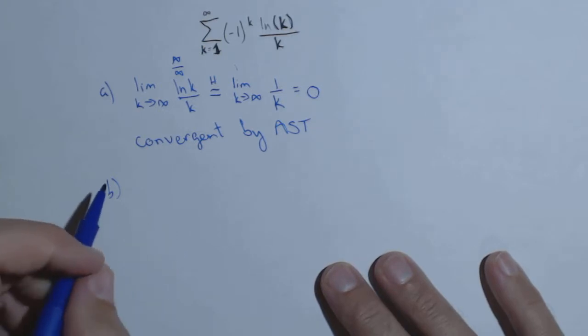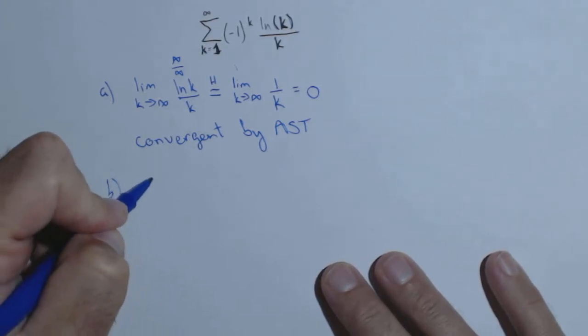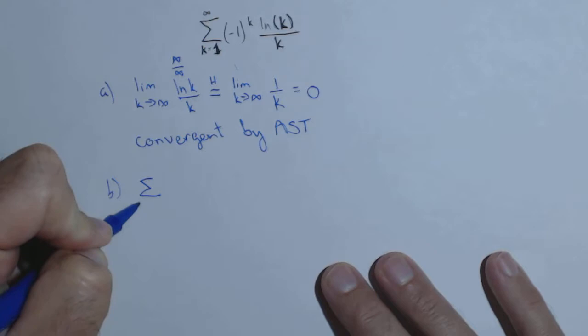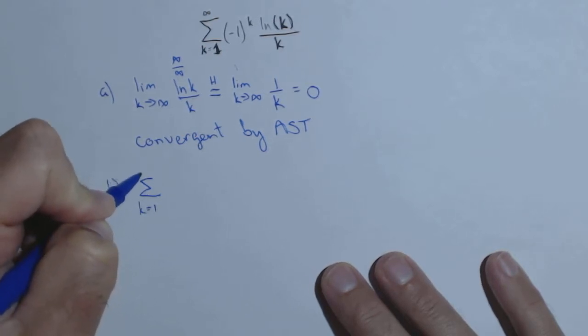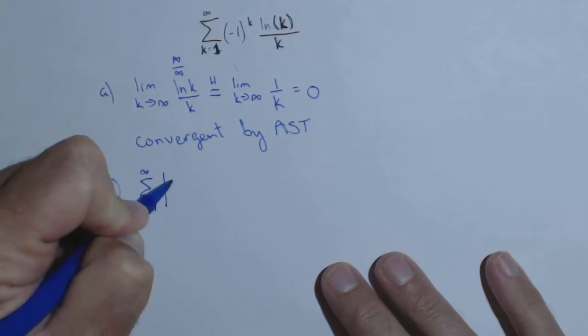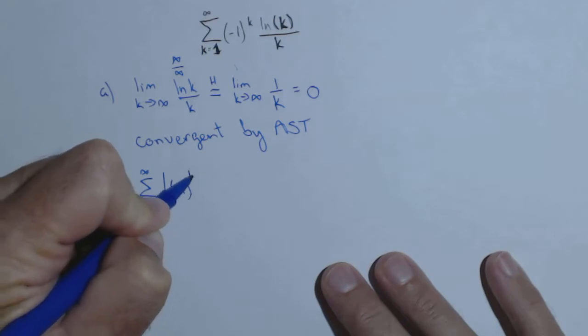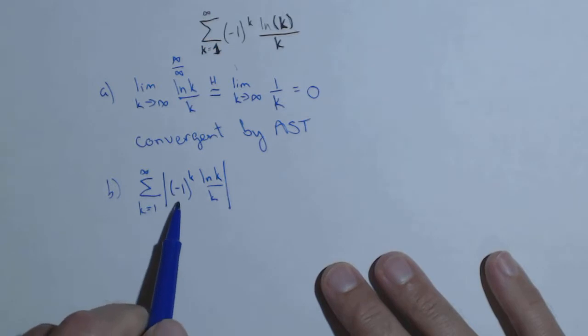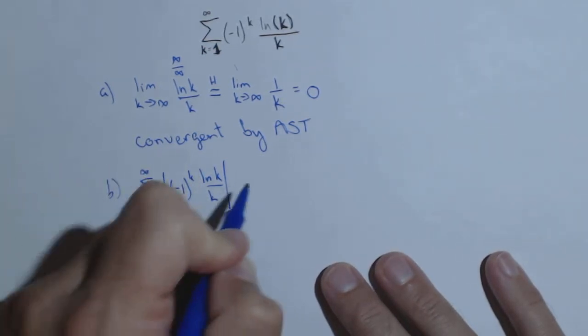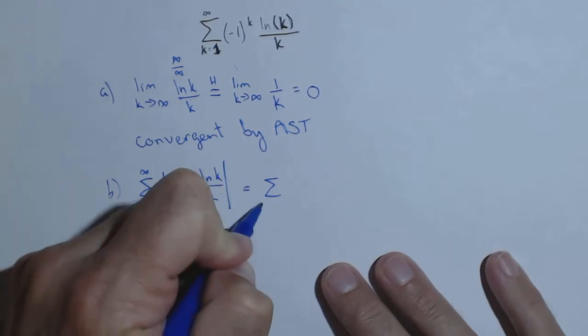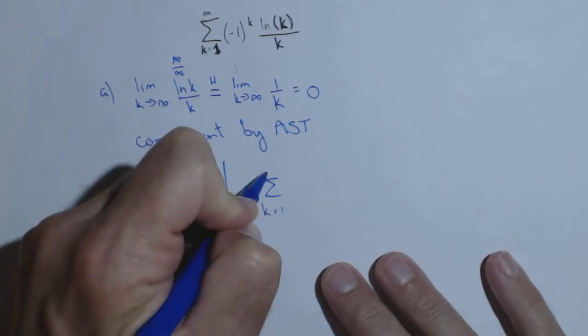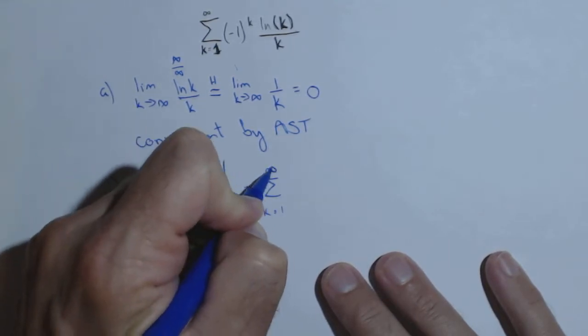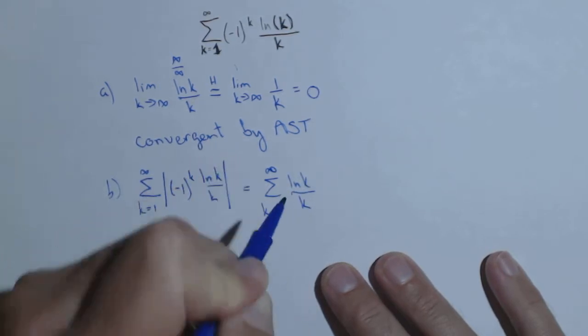Now let's see if it's absolutely convergent. So what we need to do is test the absolute value of this series. So negative one to the k, ln of k over k. Now, this is the only part that makes the terms negative, so taking the absolute value makes this equal to k equals one to infinity of ln of k over k.